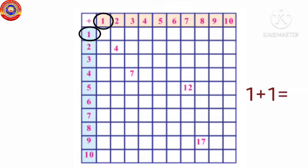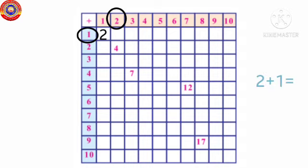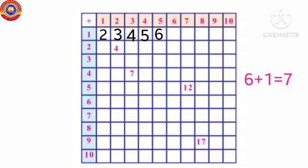Then add 2 with 1, that is 2 plus 1 equals 3. Then 3 plus 1 equals 4, 4 plus 1 equals 5, 5 plus 1 equals 6, 6 plus 1 equals 7, 7 plus 1 equals 8, 8 plus 1 equals 9, 9 plus 1 equals 10, 10 plus 1 equals 11. In this way you fill all other boxes in the grid.